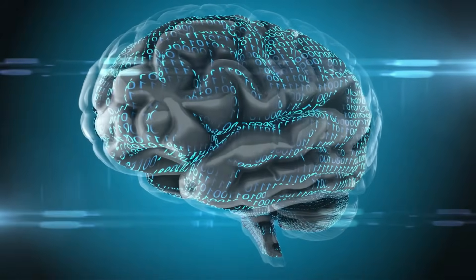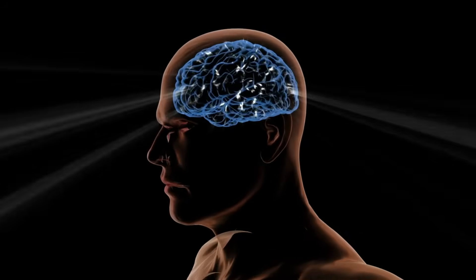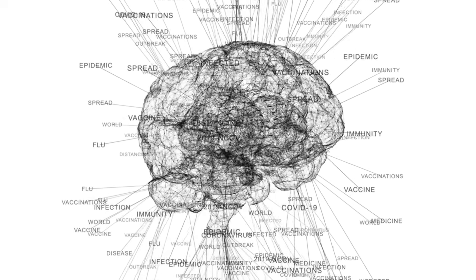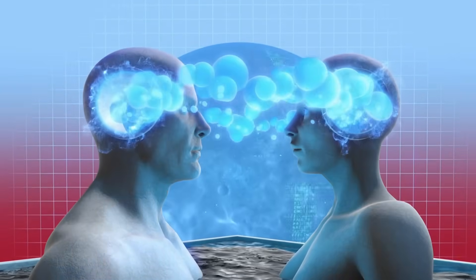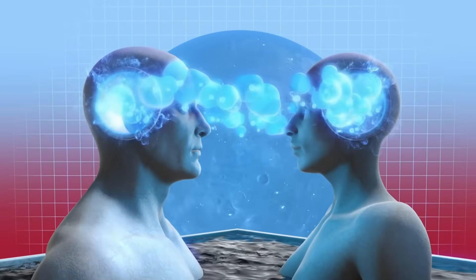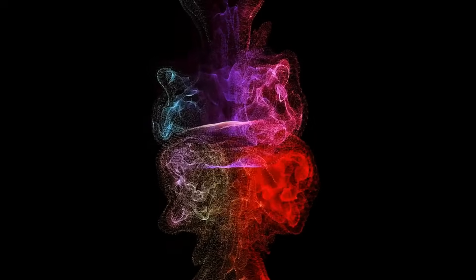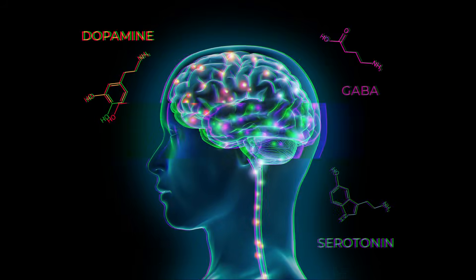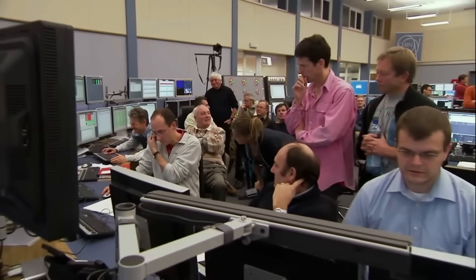This suggests that the connectivity of our minds could be far more mysterious than traditional neuroscience ever imagined. What does that mean for us? If our brainwaves can indeed become entangled, could this be the underlying mechanism for phenomena like telepathy or shared emotions? Could it imply that our thoughts might be linked with those of another person, regardless of the physical distance between us? These questions are not only intriguing, they're revolutionary.